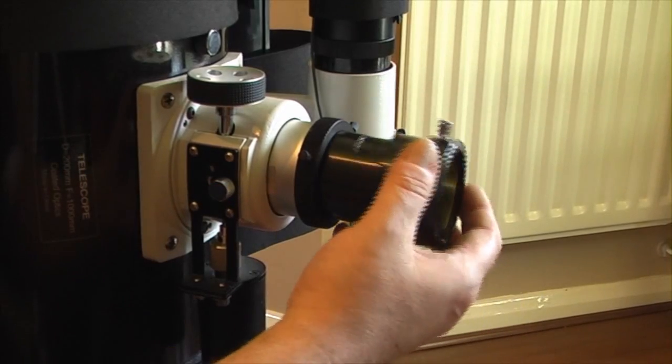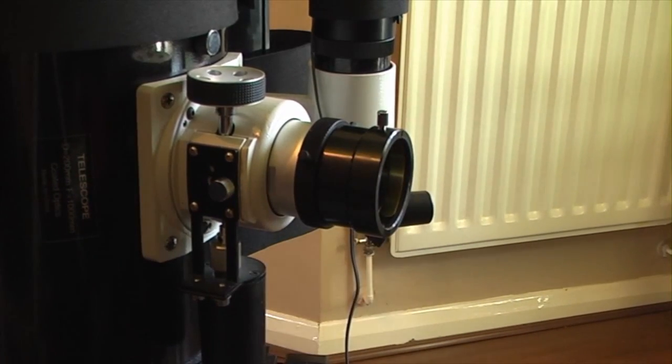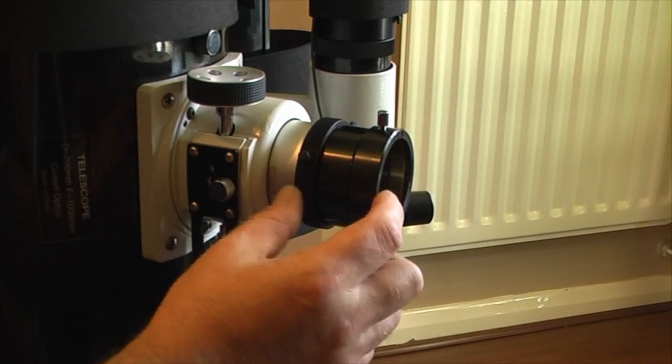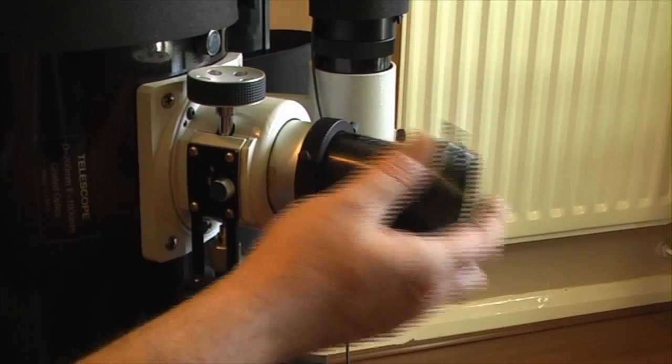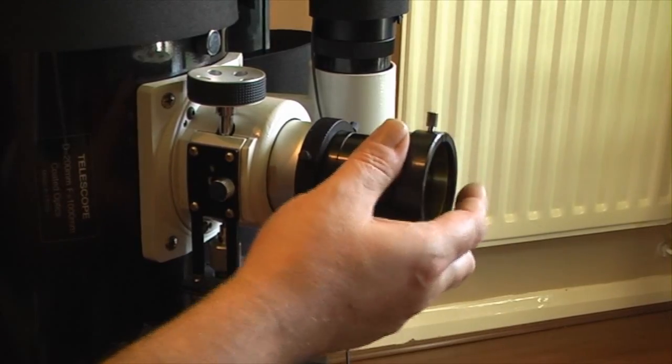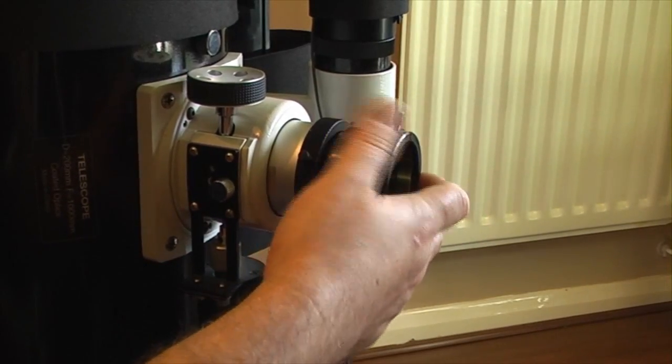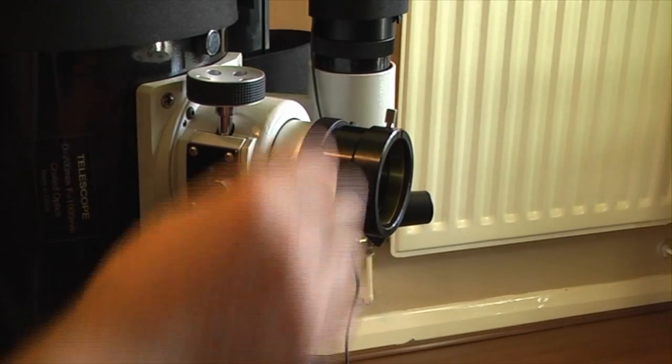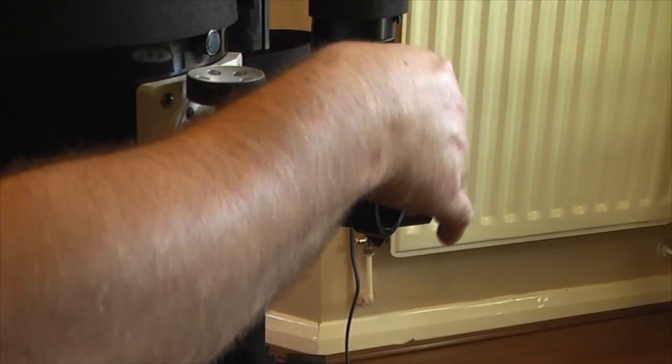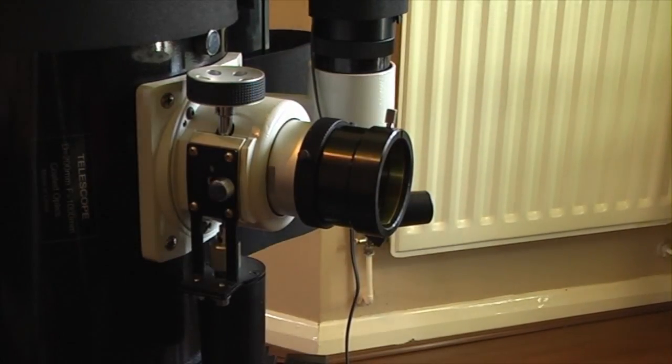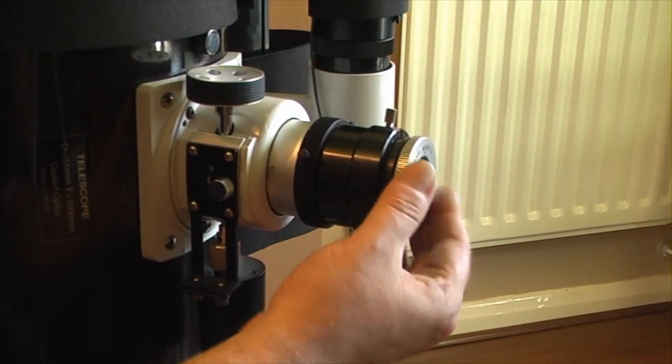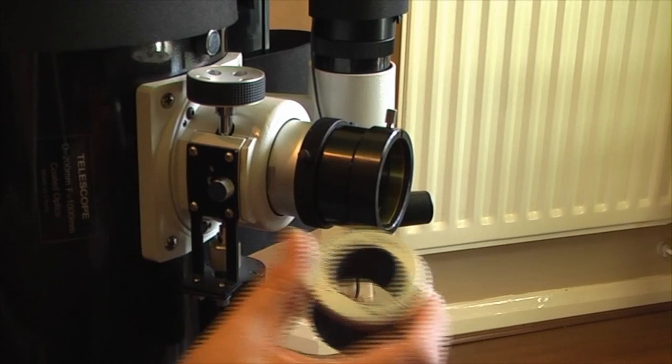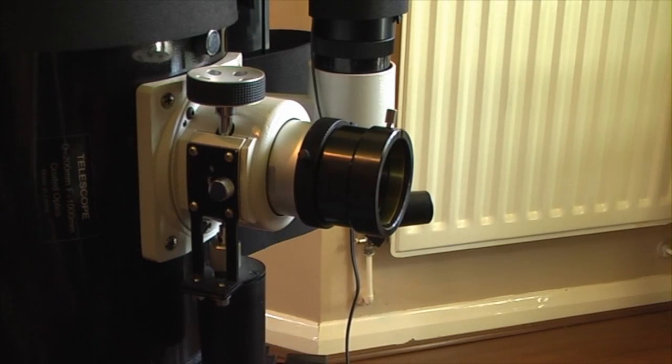Now this will fit directly into there. That now gives you the same spacing as you previously had with your Skywatcher adapter. It's a lot easier to do this than it is to start unscrewing and screwing fine threads in the middle of the night when it's dark. So it just makes things a lot easier. And obviously again you can take your adapter and fit that in or your 2-inch eyepieces or whatever. So we've got a fully adaptable system with regards to focus travel.